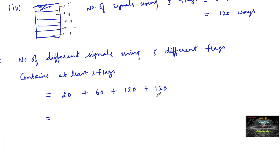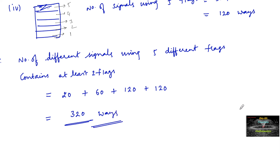So the total number of different signals is 20 + 60 + 120 + 120 = 320. Therefore, 320 ways we can prepare the signals using at least 2 flags from the 5 available flags.